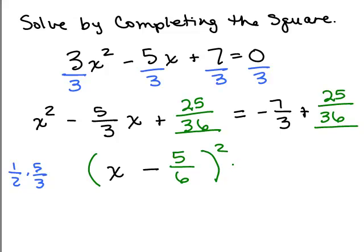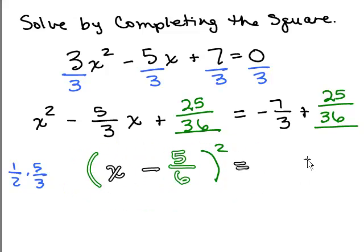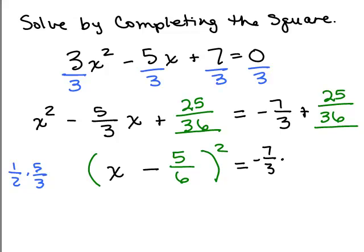The left side looks good. Now we need to get a common denominator over here on the right-hand side. I'm going to get a common denominator. So I've got 3 in the denominator and 36. I need to get a denominator of 36. That's the least common denominator. So negative 7 thirds, I'm going to multiply that by 12 over 12, plus your 25/36. Hopefully you see you now would have a common denominator of 36.